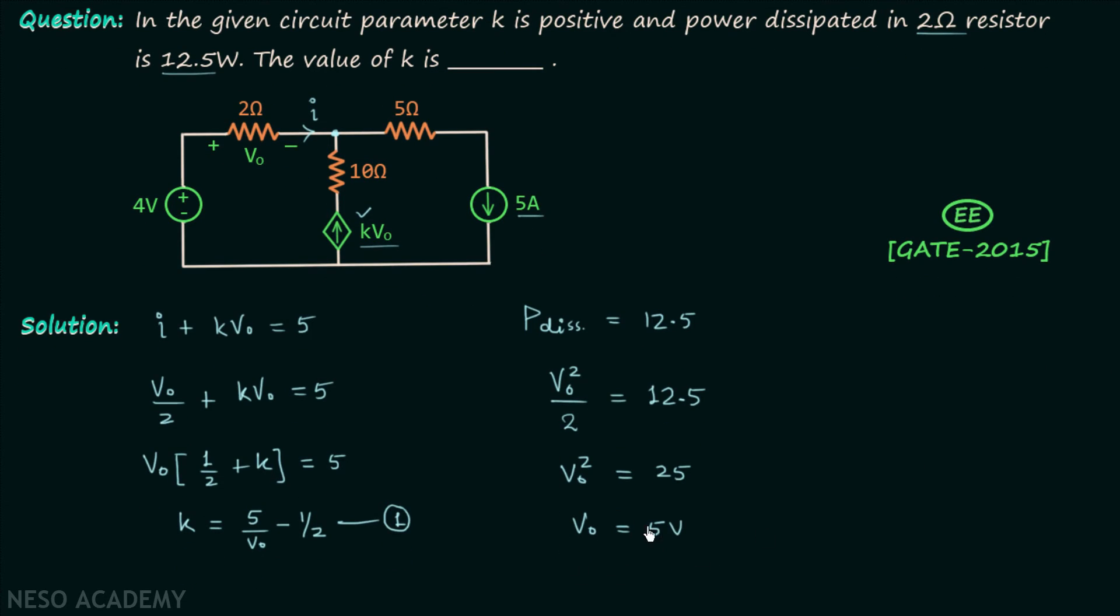Or we can say v0 is equal to 5 volts. Now we know v0 and we will put the value of v0 in equation number 1.